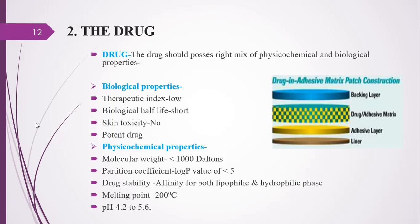Considering physico-chemical properties: molecular weight should be less than 1000 Daltons; partition coefficient (log P value) should be less than 5; and the drug should have an affinity for both lipophilic and hydrophilic fields. The melting point should be less than 200°C, because if the melting point is higher, the solubility and penetration of the drug in the stratum corneum will be less. The pH should be between 4.2 to 5.6 so that it does not harm the skin.